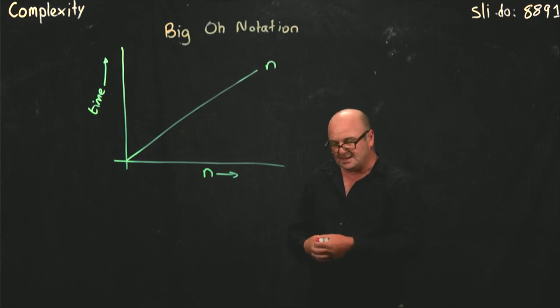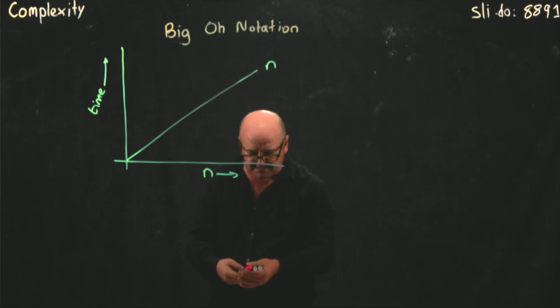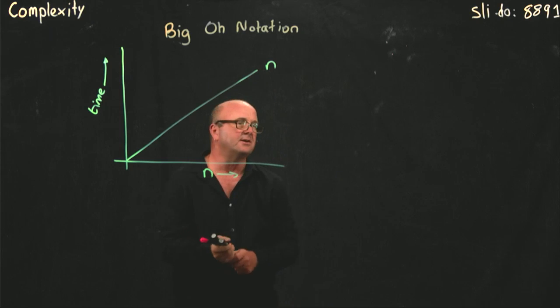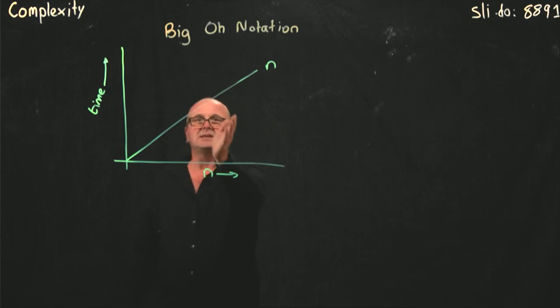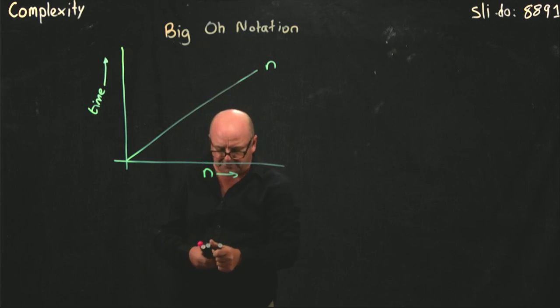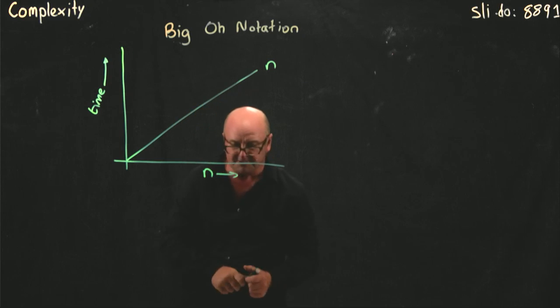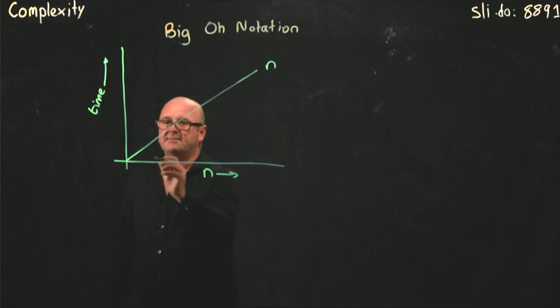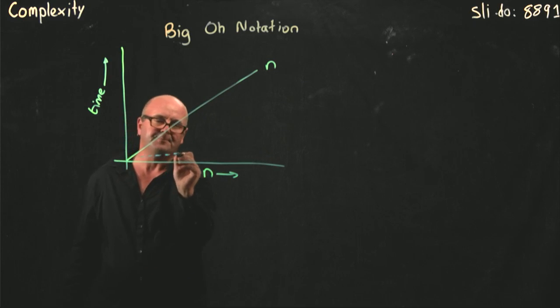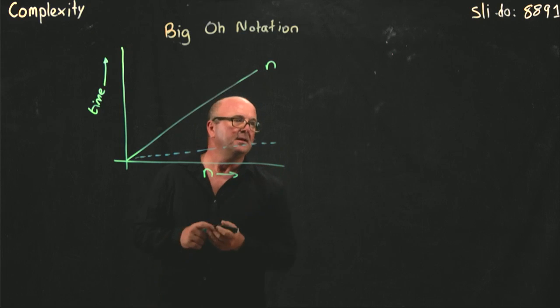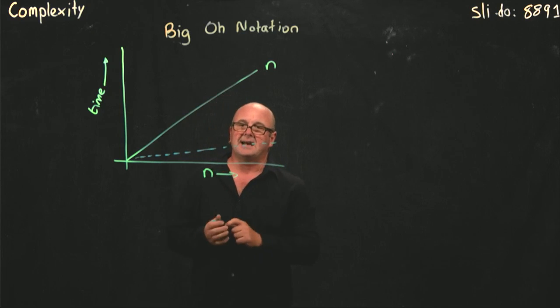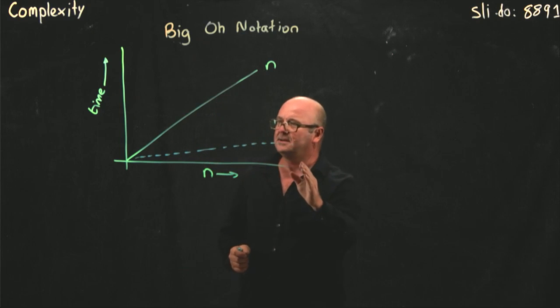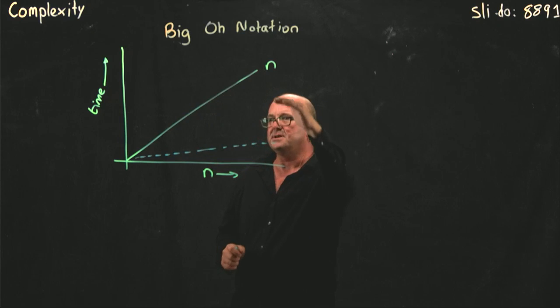So basically, we divide this graph up into different sections, depending on whether we are the same as this algorithm, above it, or below it. So if we have some other function that grows with a different complexity, let's say we have a function that grows down here, what that means is that as n is increasing, it's taking us less time to do the work.